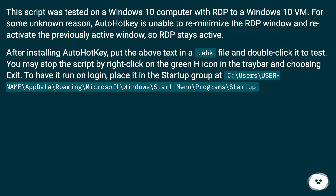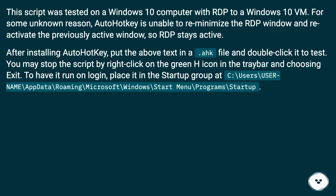After installing AutoHotkey, put the above text in a .ahk file and double-click it to test. You may stop the script by right-clicking on the green H icon in the tray bar and choosing Exit. To have it run on login, place it in the Startup group at: C:\Users\username\AppData\Roaming\Microsoft\Windows\Start Menu\Programs\Startup.